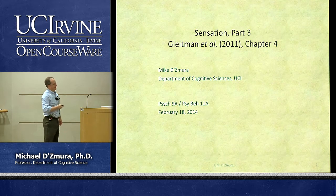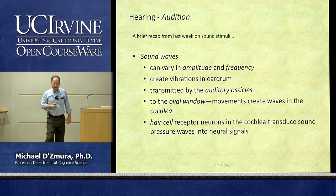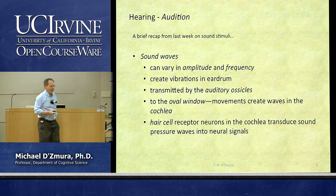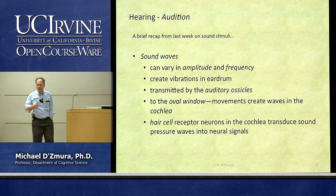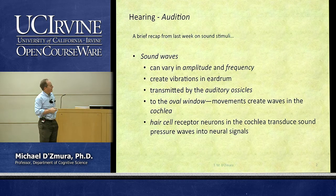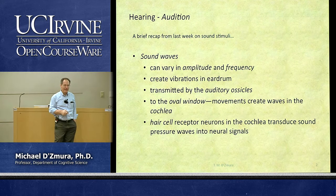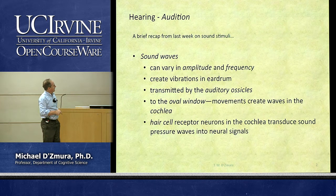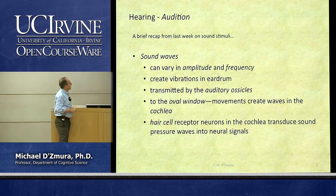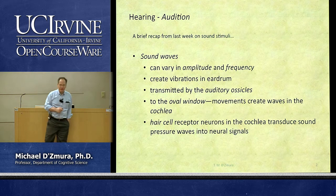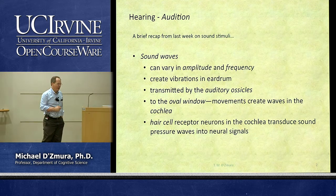Sensation part three. Where we left off last week was a discussion of hearing or audition. I want to recapitulate briefly some of the physical aspects of sound stimuli. Sound waves can vary in their amplitude and in their frequency if they are pure tones or sinusoids. These will create vibrations of our eardrum, transmitted to the cochlea by bones known as the ossicles. Inside the cochlea we find hair cell receptor neurons that signal vibration caused by sound pressure waves.